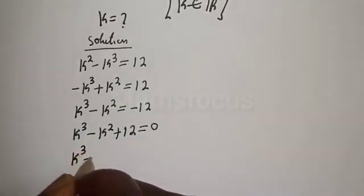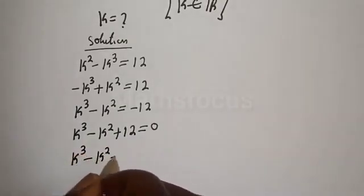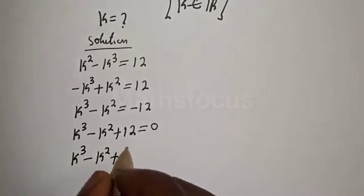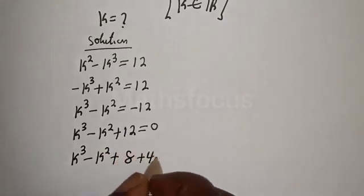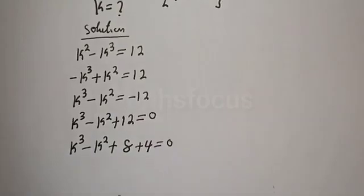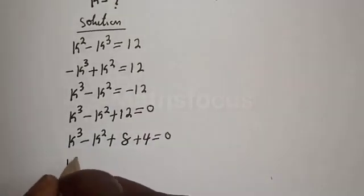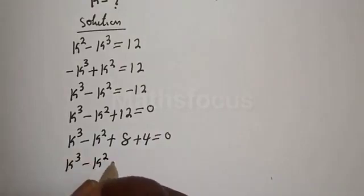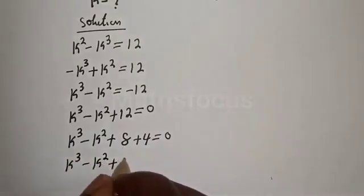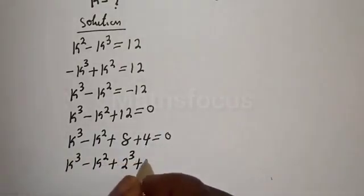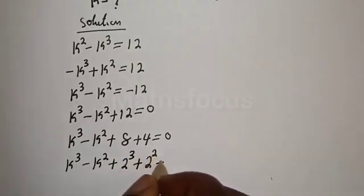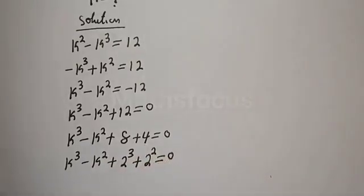k raised to power 3 minus k squared plus 12 can be written by splitting 12 as 8 plus 4. So k raised to power 3 plus 2 raised to power 3, plus 4 — which is 2 squared — is equal to 0.